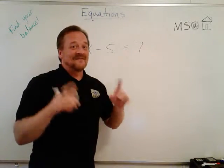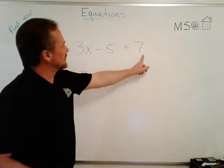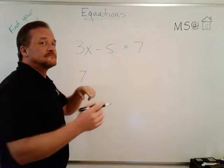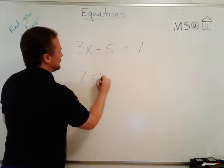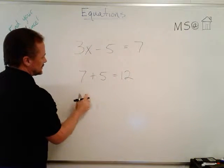One more time we start with where he ended. And we start going backwards. He subtracted 5 so we're going to do what? We're going to add 5. We're going to add 5, and that gives us 12.